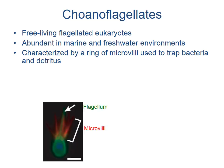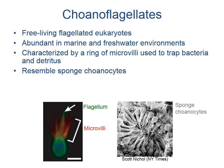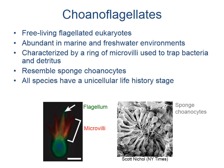These organisms are characterized by a ring of microvilli that is used to trap bacteria and detritus. Choanoflagellates also resemble sponge cells called choanocytes — the cells that promote the flow of seawater into sponge canals through movement of their flagella and also possess microvilli used to trap food bacteria. All species of choanoflagellates have a unicellular life history stage.